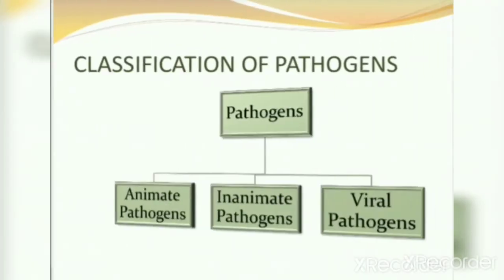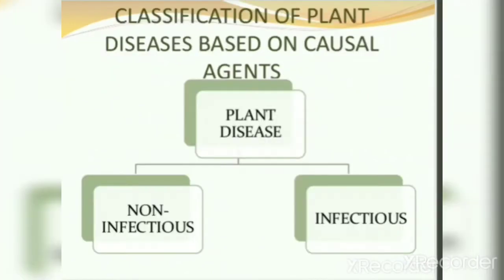Now we see the classification of pathogens. The classification includes: animate pathogen, inanimate pathogen, and viral pathogen. We also see the classification of plant disease based on the causal agent.